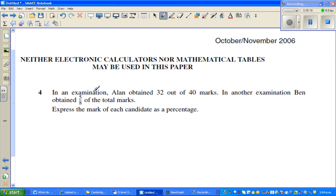Let me do one more question. In an examination, Allen scored 32 out of 40 marks. In another examination, Ben obtained 5 eighths of the total mark. Express the marks of each candidate as a percentage. So percentage means out of 100. Per cent. Out of 100. Cent means 100. Per is out of. Out of 100.